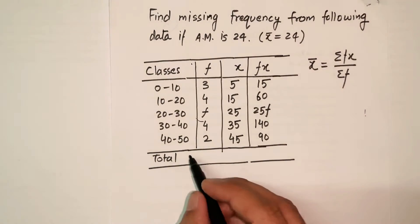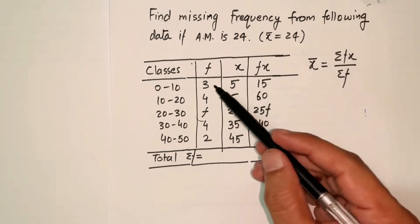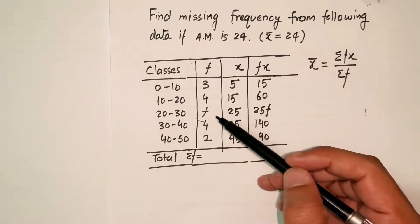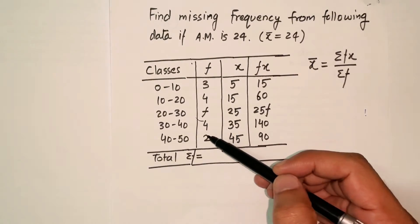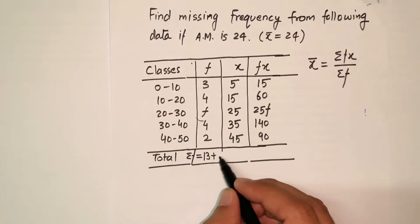Now I have completed my table and the rest of the things are pretty simple. I'm calculating total here. The first total is sum of f, the total of frequency, so if you sum them: 3 plus 4 is 7, plus 4 plus 2, that gives me 13 plus f.